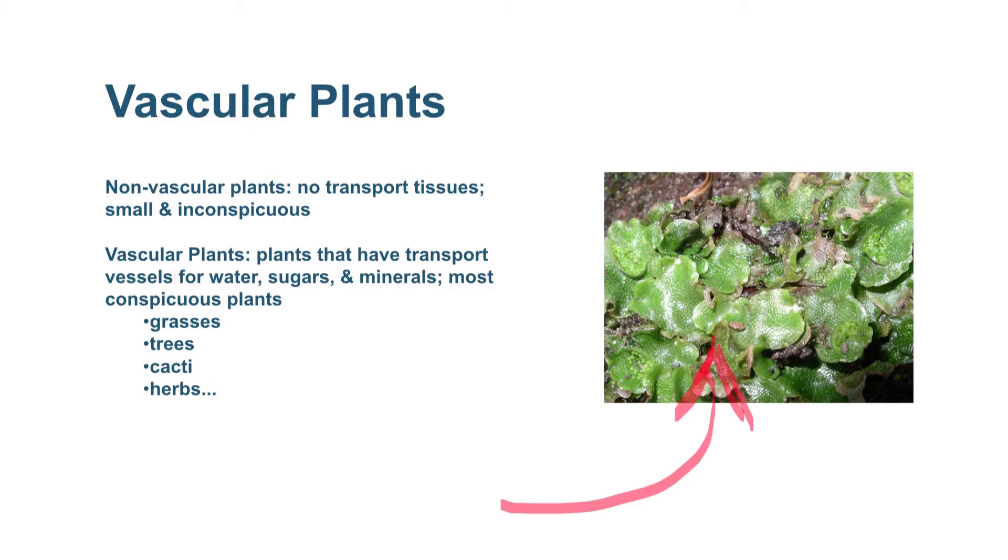Vascular plants have transport vessels for water, sugars, and minerals. These are the most conspicuous plants on the planet. They include grasses, trees, cacti, herbs, etc.